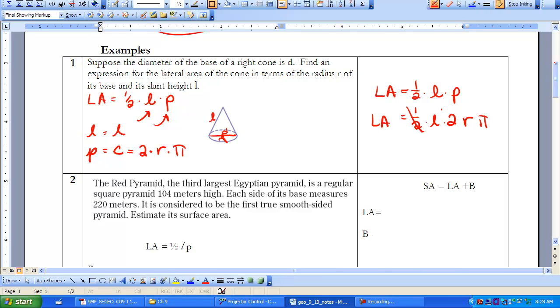Now we know that a half times 2 makes 1. So the lateral area, then, of this cone is going to be pi LR.